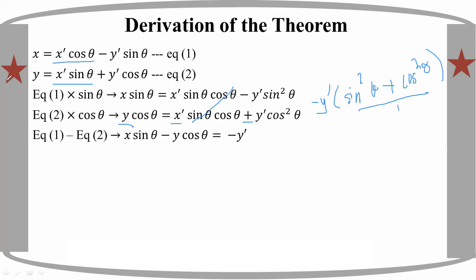You can write 8 sin theta minus 1 cos theta. Similarly, you can write minus 1 prime, and write sin squared theta plus cos squared theta. You can write 1 prime theta, and once you write 1 prime theta...